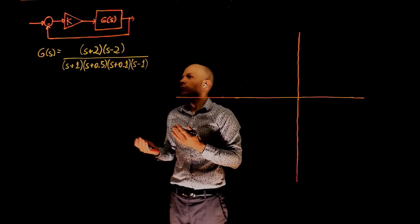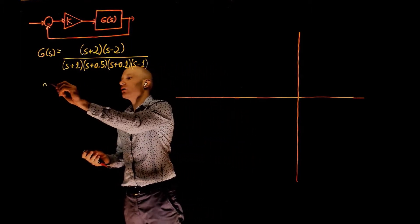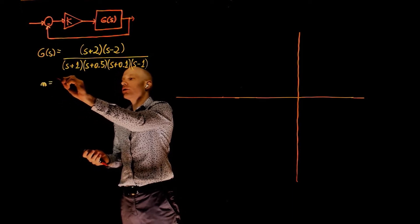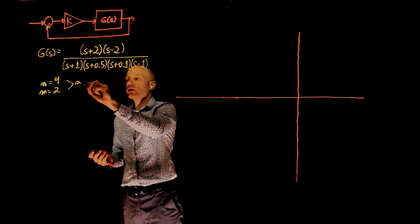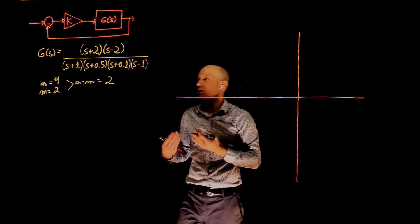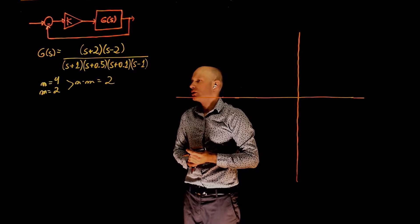Here we have two zeros and four poles. n equals four, m equals two. n minus m is equal to two, so we have an excess of two poles more than zeros.